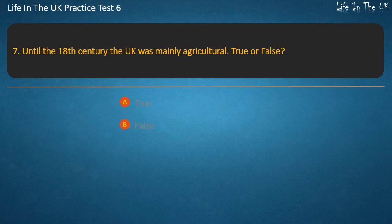Question 7. Until the 18th century the UK was mainly agricultural. True or false? Answer: True.